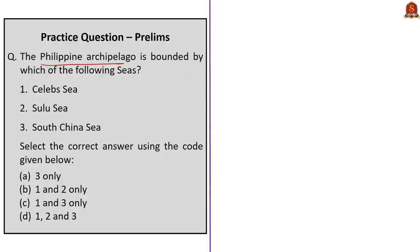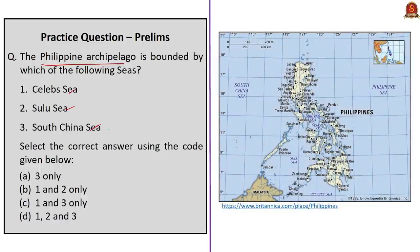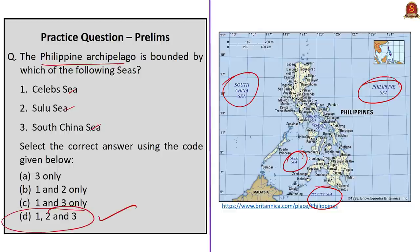The next question is a map-based question asking: The Philippine archipelago is bounded by which of the following seas — Celebes Sea, Sulu Sea, South China Sea? The Philippine archipelago is bounded by the Philippine Sea to the east, the Celebes Sea to the south, the Sulu Sea to the southwest, and the South China Sea to the west and north. The correct answer is Option D — all three: one, two, and three.